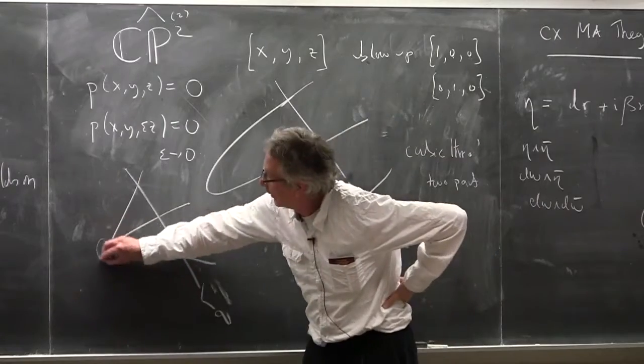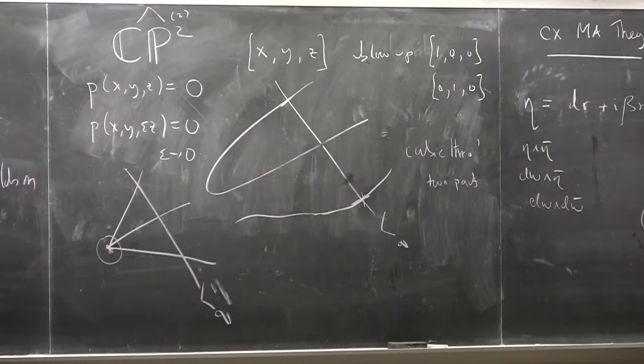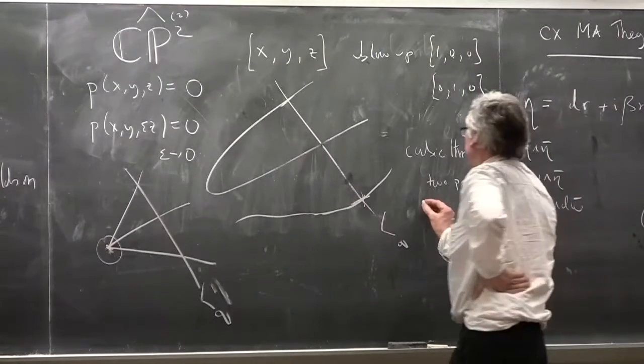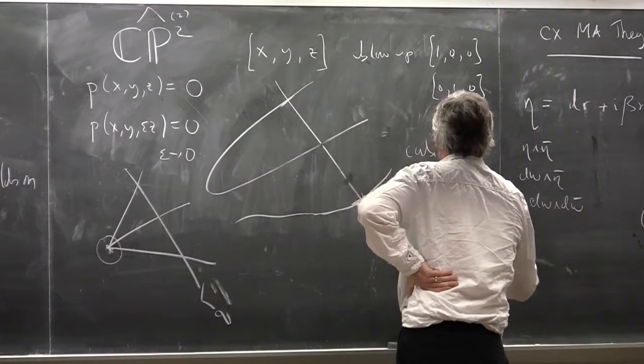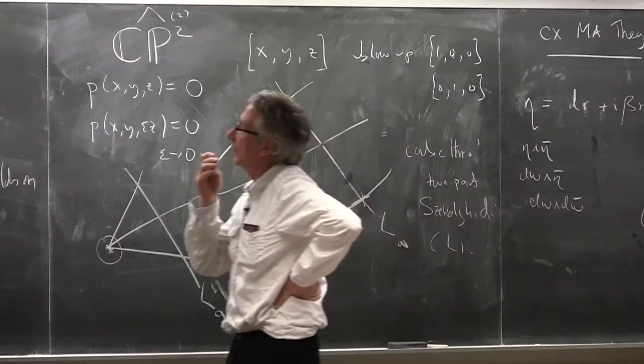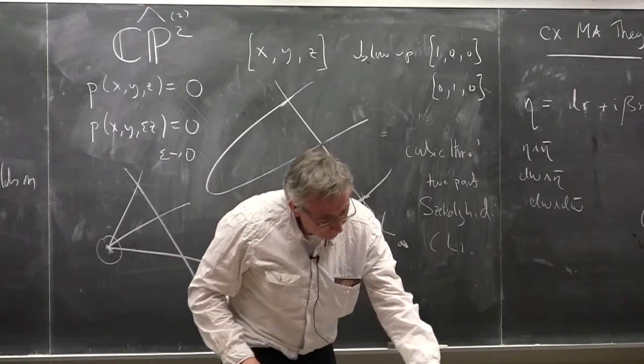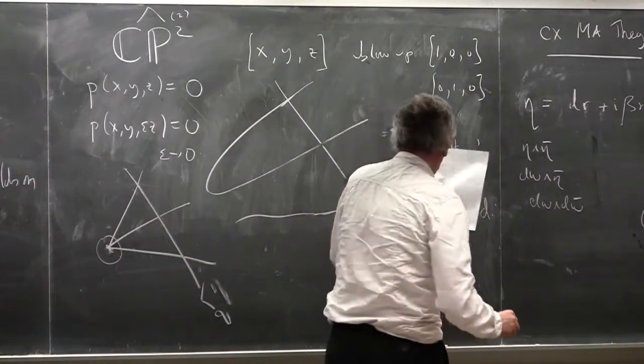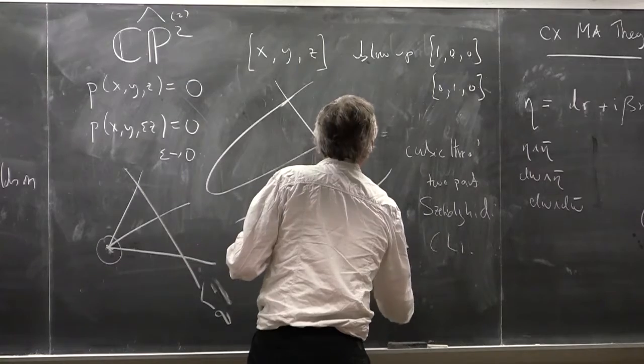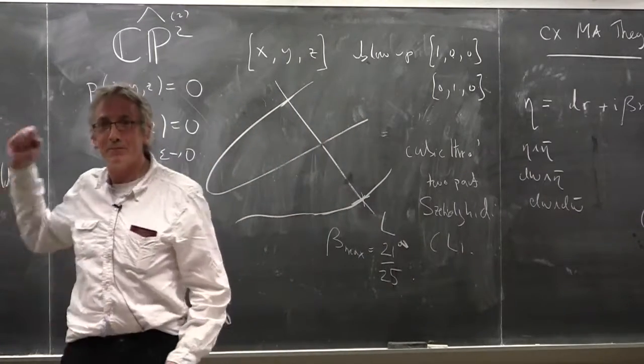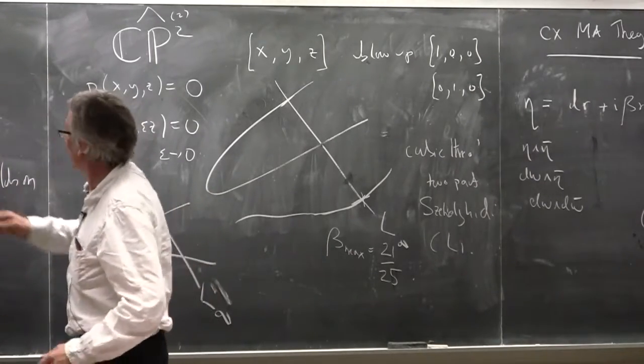Moreover, by calculations of Gabor Székelyhidi and Chi Li, one can work out exactly where we stop in this situation. And it's written down somewhere. So beta max is equal to 21 over 25. We know exactly that. We'll go that far and no further. And then we'll get this picture here.